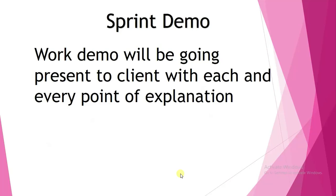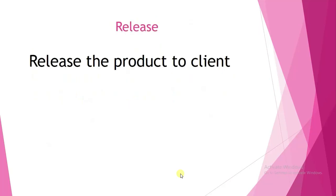After the sprint demo comes the release phase. Once the client is satisfied, if there are additional features to add, we add them, and finally we release the product to the client. At release time, people from the client side also test the product to check if it is perfect or not. If any person on the client side finds bugs, they can raise them again, we fix them, and then release. This is what the release phase does.